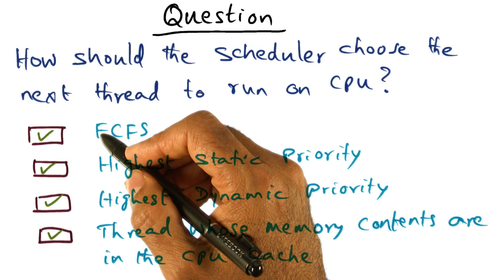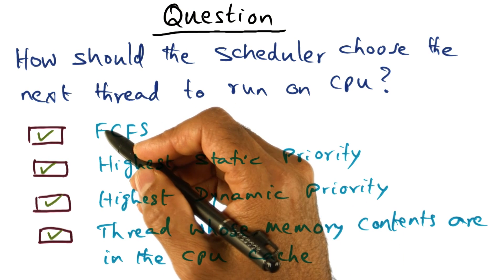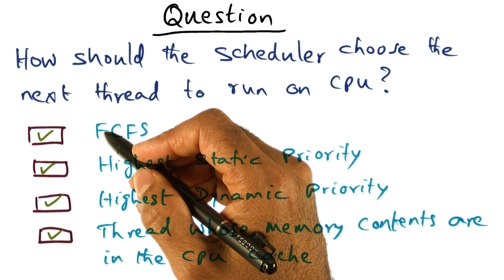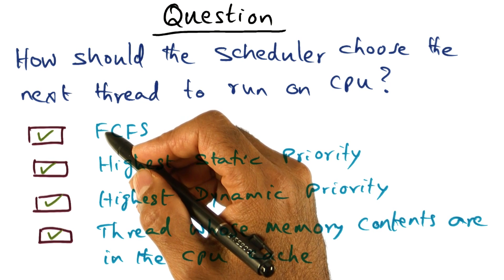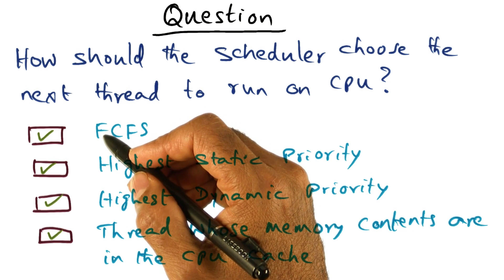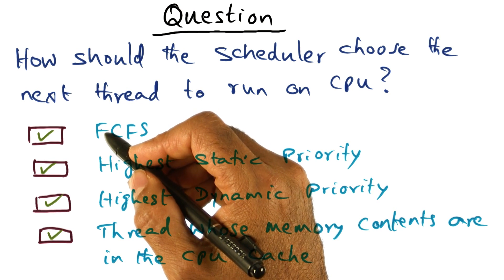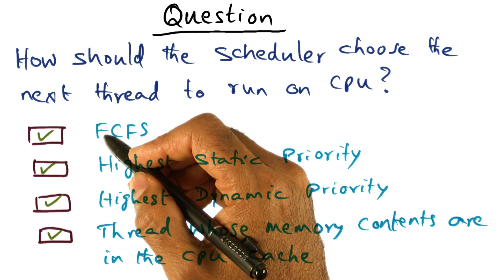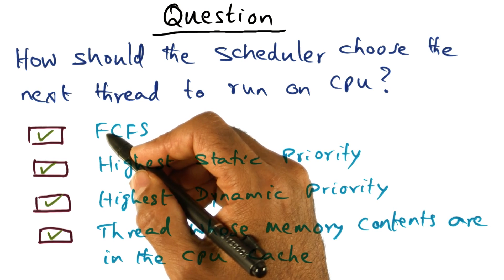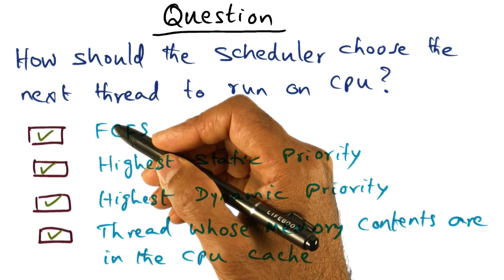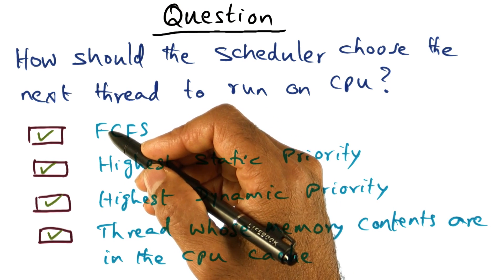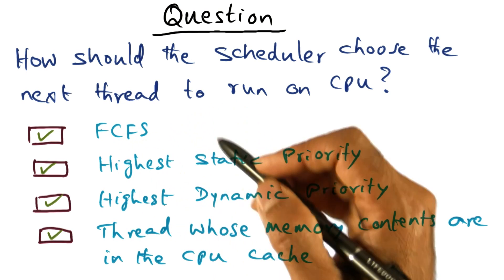First-come-first-served says there is an order of arrival into the processor, there's a fairness issue. I'm going to pick the one that became runnable at the earliest. So that is the first-come-first-served policy, and there is merit in that.